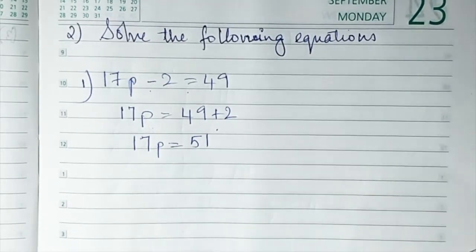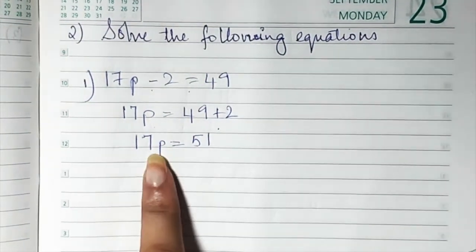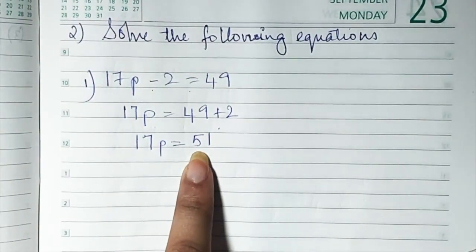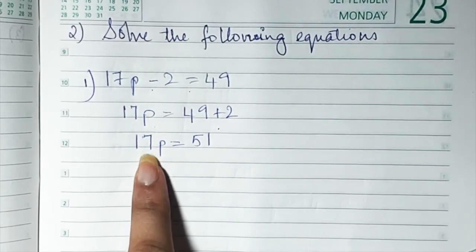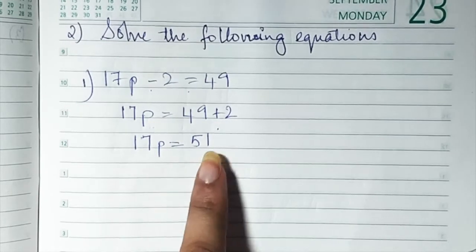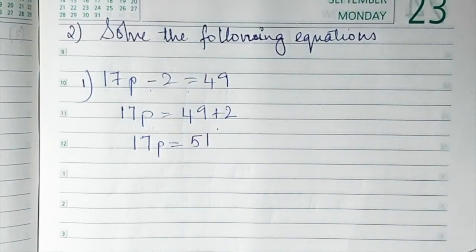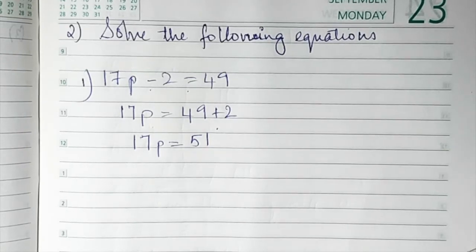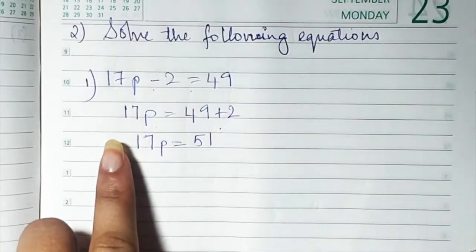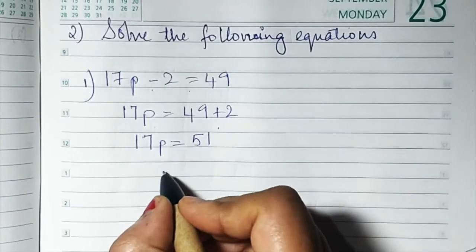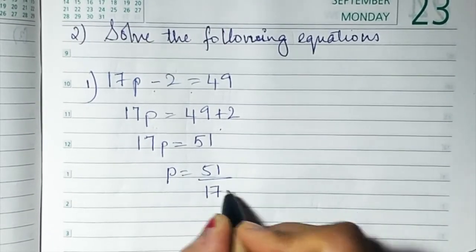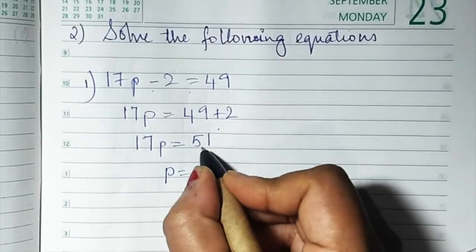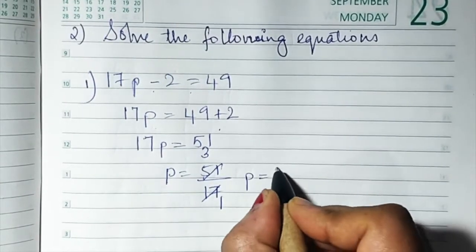Now, we have 17p here and 51 on the other side. This is 17 multiplied by p, so when you take 17 to the other side, multiplication becomes division. So p is equal to 51 upon 17. Since 17 threes are 51, the value of p is 3.